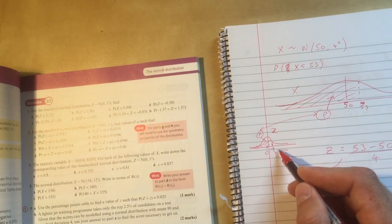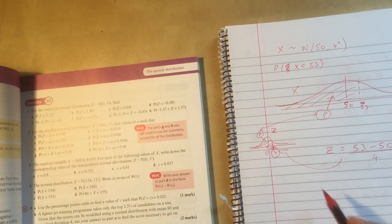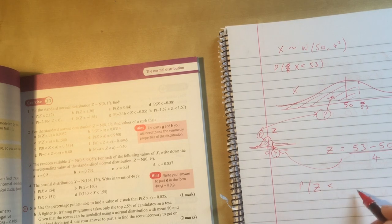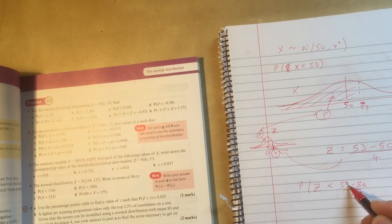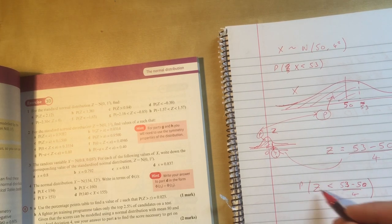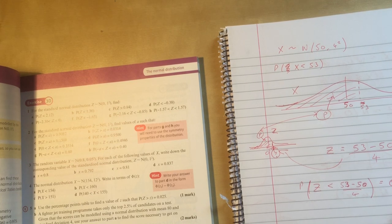That z value is the z value there on your z distribution. So the probability that capital Z is less than 53 minus 50 over 4, which if I was less lazy, I would work out is 3 quarters. The probability that z is less than that is going to be 0.75.